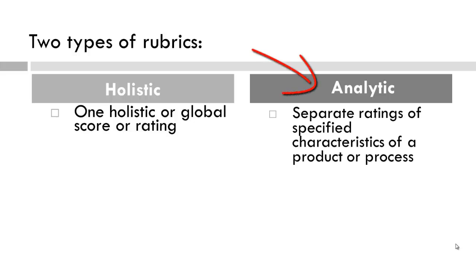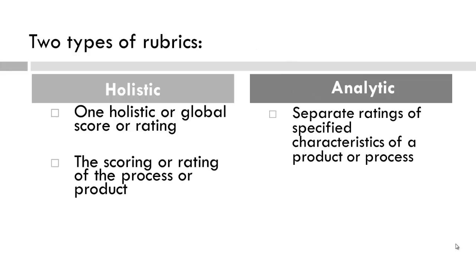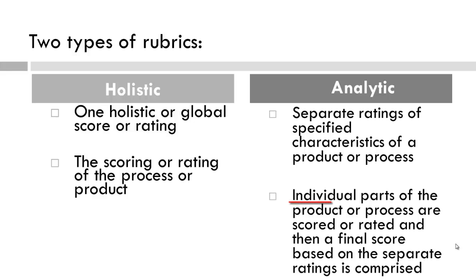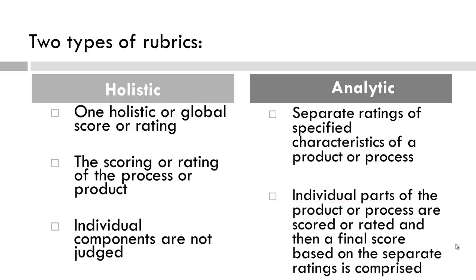In contrast, an analytic rubric provides multiple scores for various characteristics of the product or process. The holistic rubric looks at the overall process or product, but an analytic rubric looks at the individual parts of that particular process or product, where the holistic rubric does not look at the individual components.